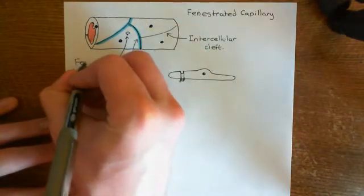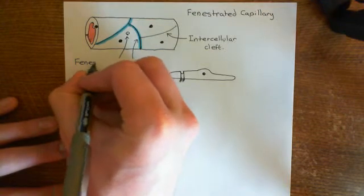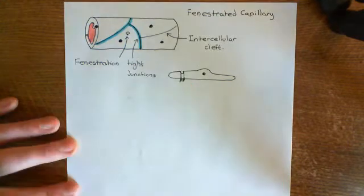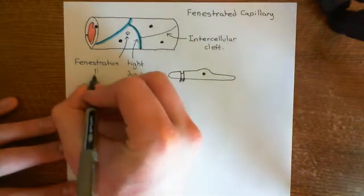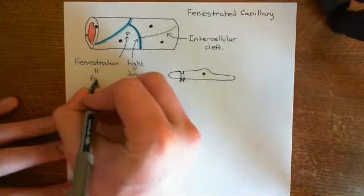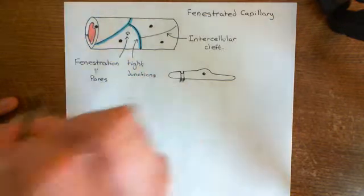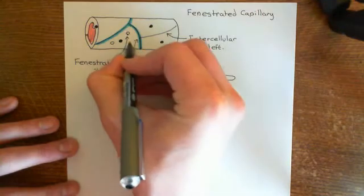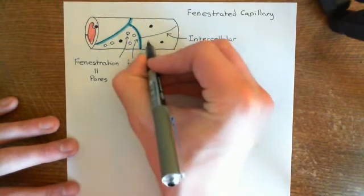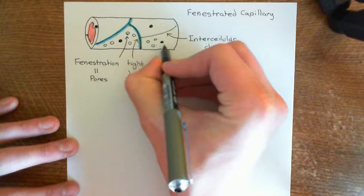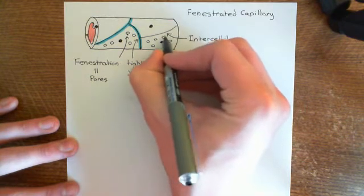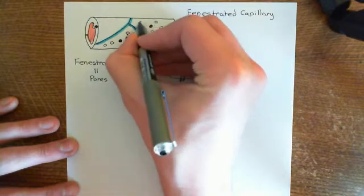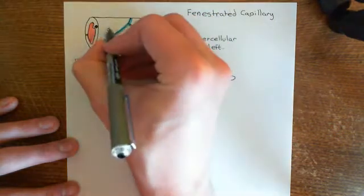That word comes from fenestra, which means window. So it's a little window in the side of the endothelial cell. These little holes are also known as pores. Fenestrated capillaries are absolutely full of these holes — you'll have loads of them all over the place. Every one of these endothelial cells will have a huge number of these little pores.